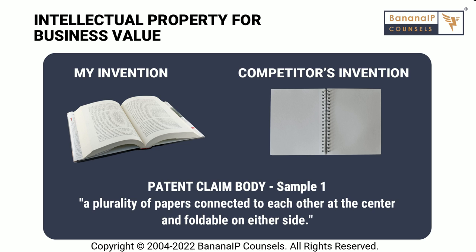This is normally referred to as the all elements rule. The question to ask is whether all three elements are present in the spirally bound book or not. If you look at this claim, the spirally bound book's papers are connected to each other on the side or at the edge, not in the center. Therefore, this element is not present, and so this patent is not infringed. Normally, when you draft patent claims, patent attorneys think about various permutations and combinations of your invention and try to cover all possible permutations and combinations — hoping to ensure a competitor cannot easily circumvent your patent and start making competing products.